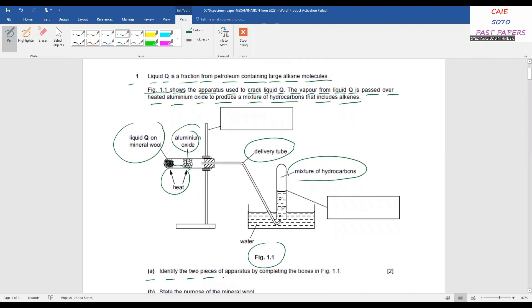Identify the two pieces of apparatus by completing the boxes in Figure 1.1. This is very easy. You can write stand or clamp. The next one is boiling or test tube used to collect gases. And then you can write down this one is boiling or test tube.